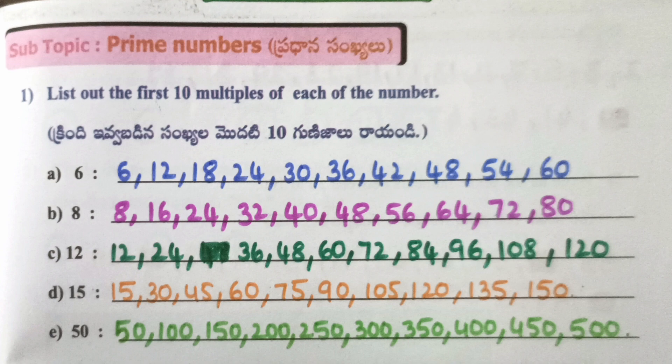D. 15: 15, 30, 45, 60, 75, 90, 105, 120, 135, 150. E. 50: 50, 100, 150, 200, 250, 300, 350, 400, 450, 500.